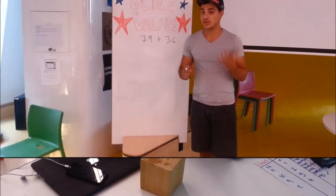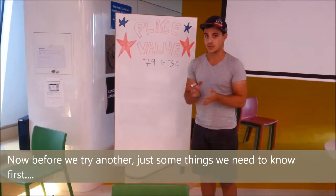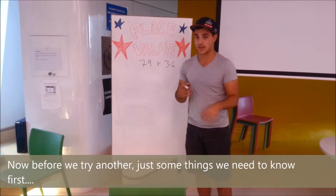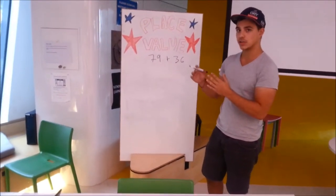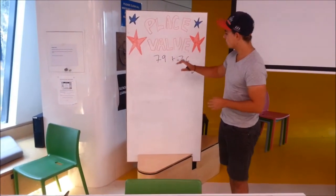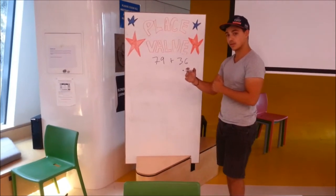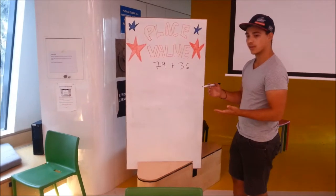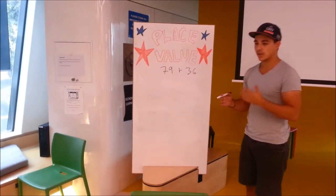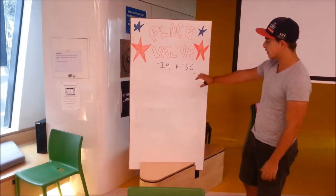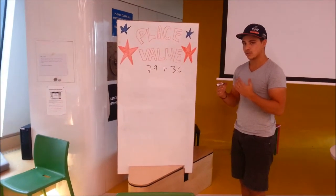If you have units and numbers in place value, 10 units make 1 ten, as you can see with the MAB blocks, and then 10 tens make 100. Sometimes what can happen when doing addition is that these numbers can overlap — if you've got more than 10 units, it creates 1 ten. This is a common misconception with students who don't understand place value, because you can end up with more than 10 units.